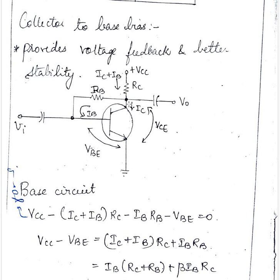The base current IB, collector current IC is here and so this current is the total current IC plus IB.